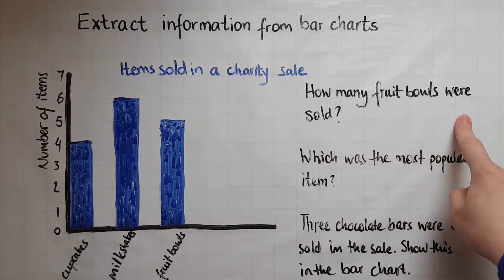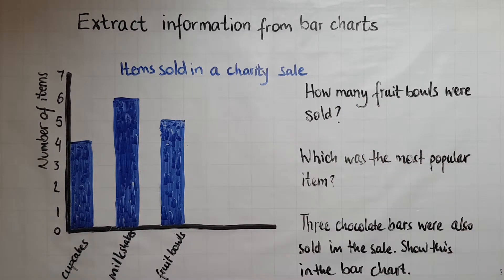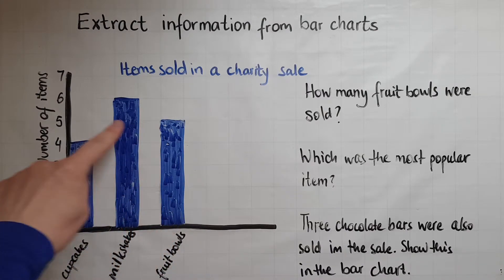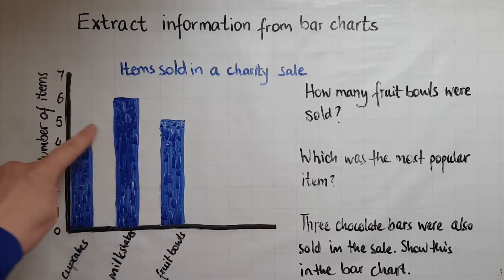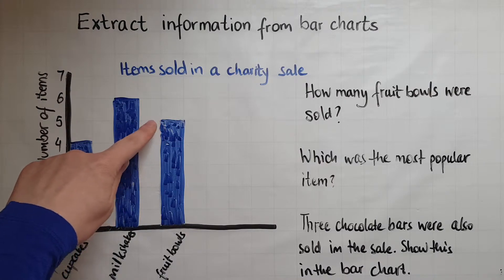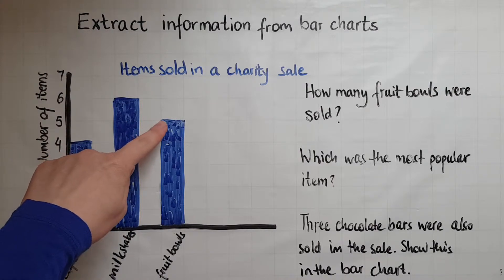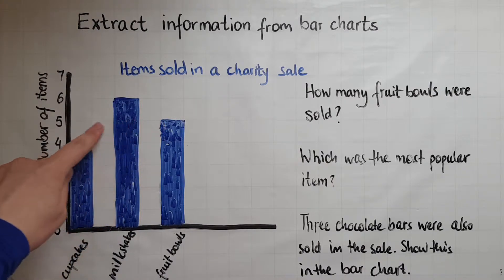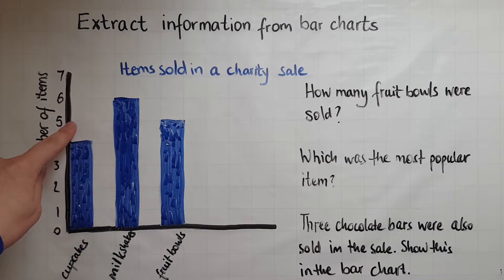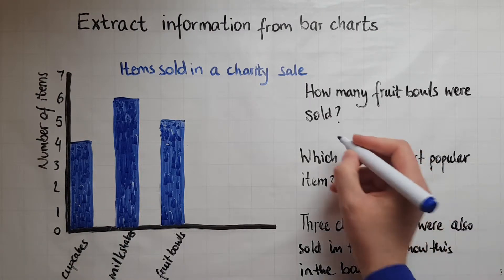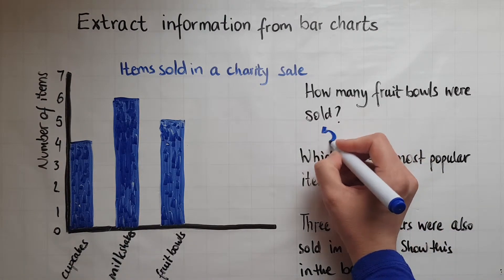How many fruit bowls were sold? So we're looking for fruit bowls — there they are — and there were five of them sold. You might find it useful to draw a line and match it with a number if you are unsure. So there were five of them.